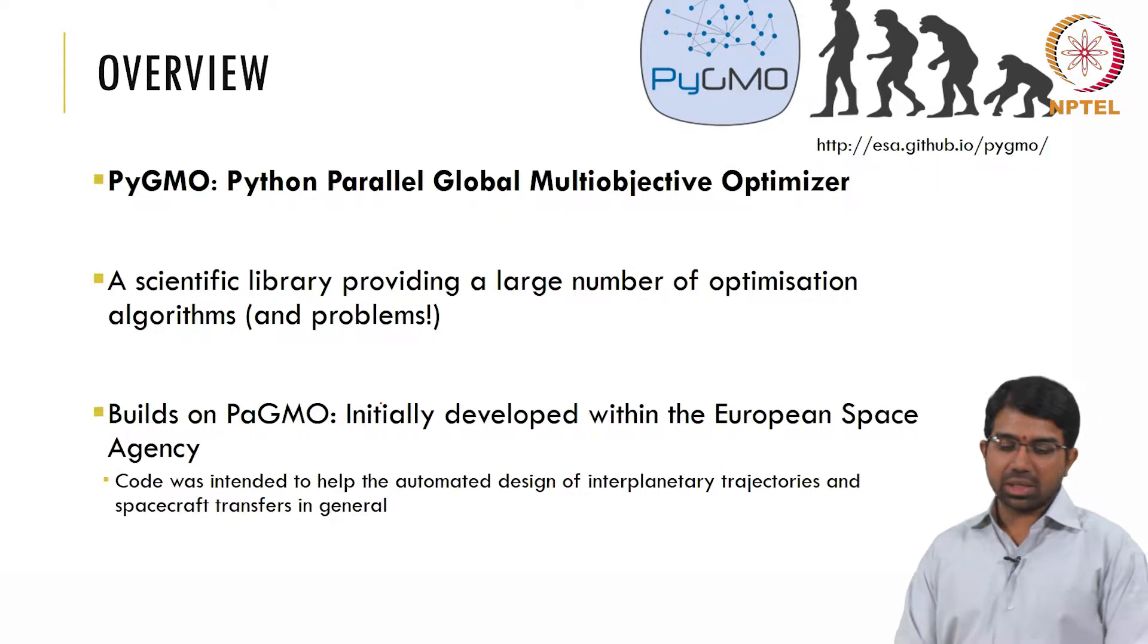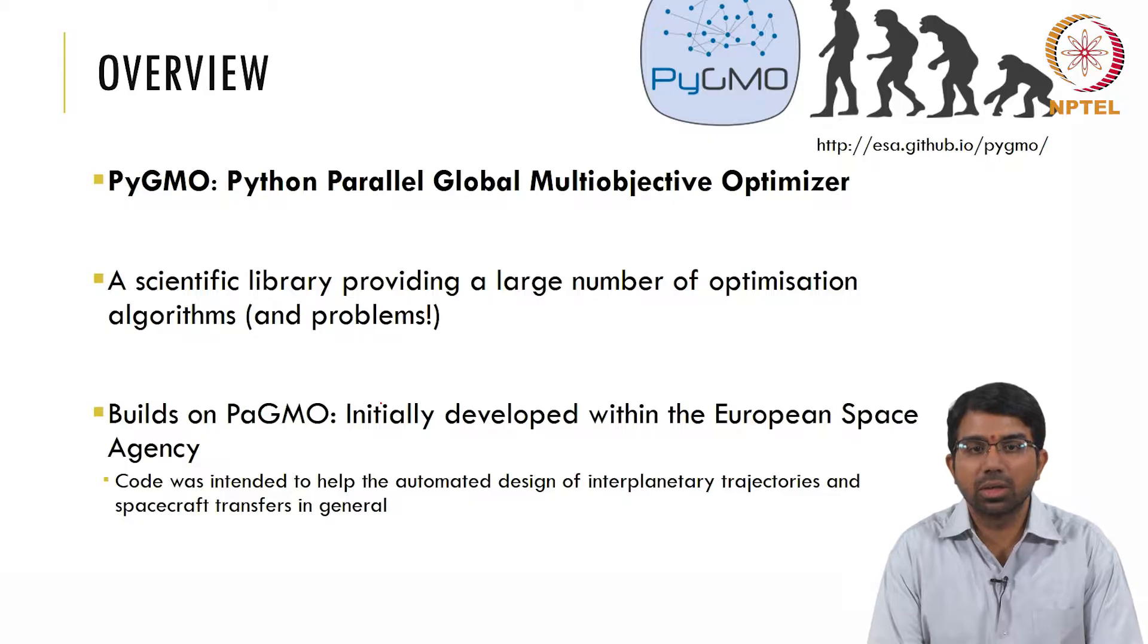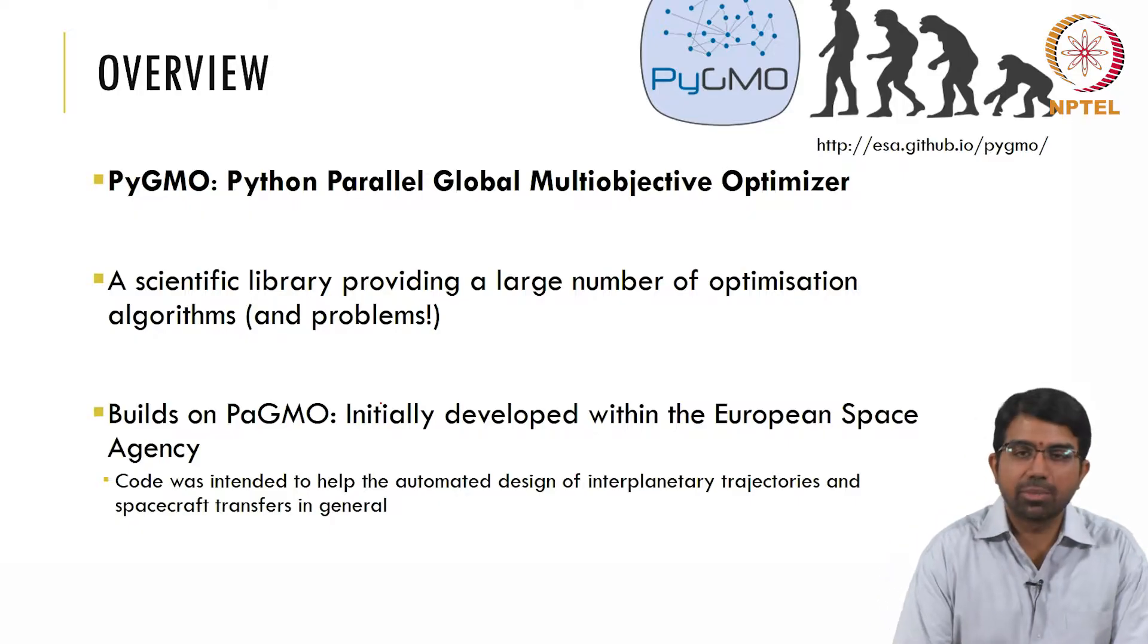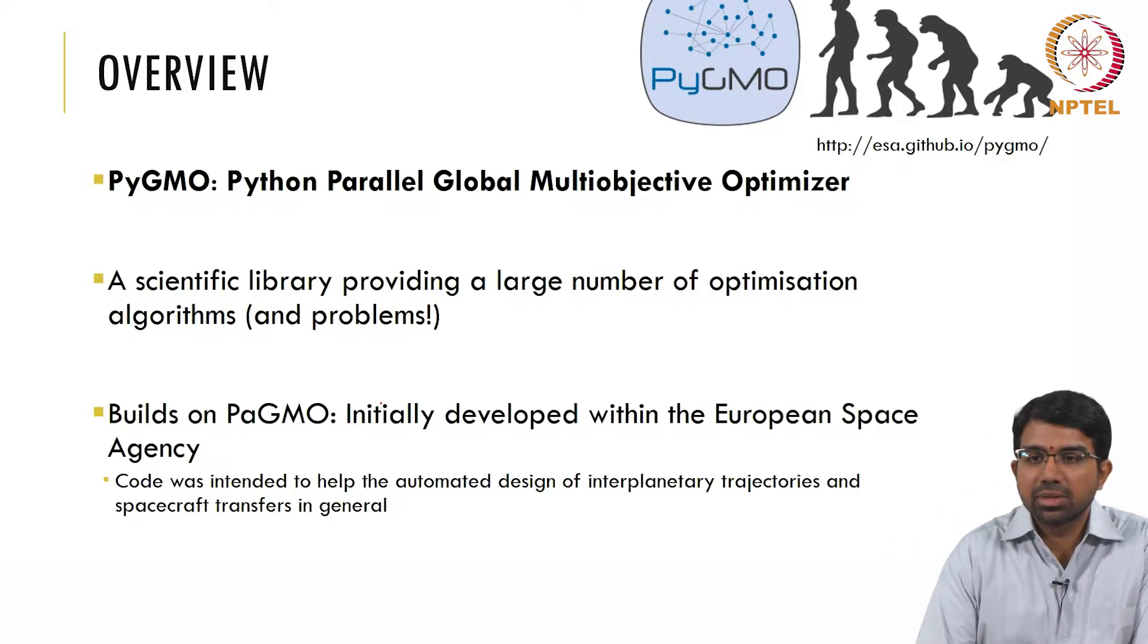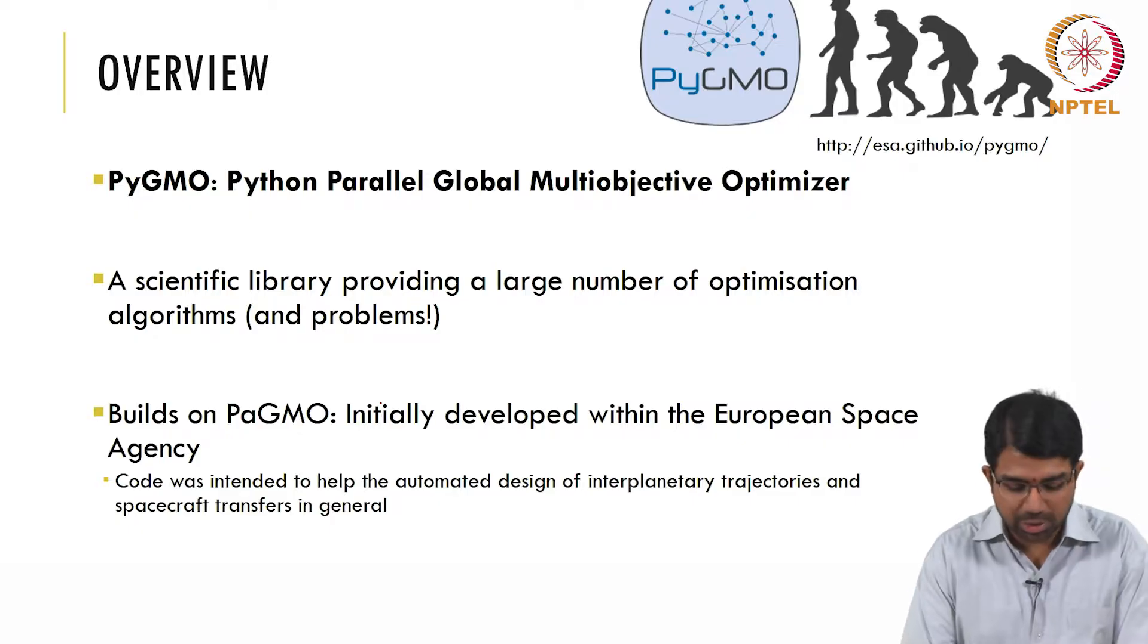So pygmo is basically a Python package. It stands for Python parallel global multi-objective optimizer. It is a scientific library which provides a large number of optimisation algorithms as well as problems. There are many test problems that people use to stress test any given algorithm. There is something known as the Rosenbrock function and things like that.